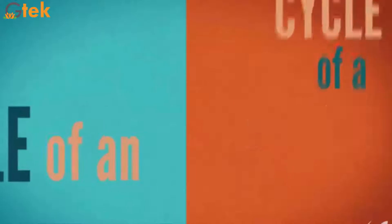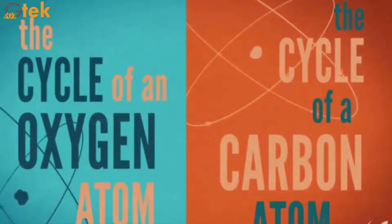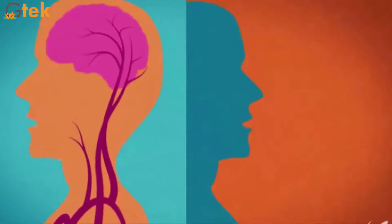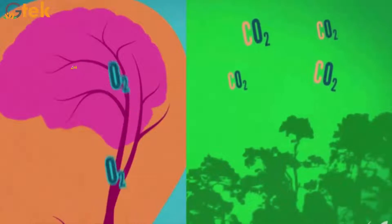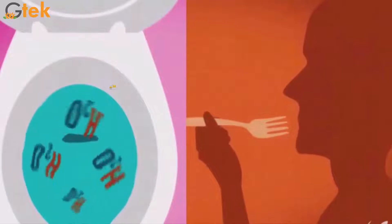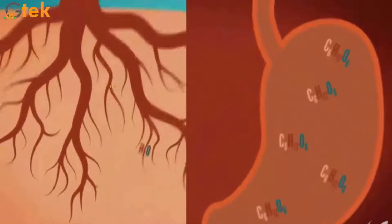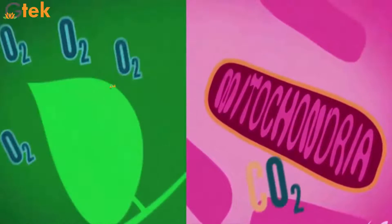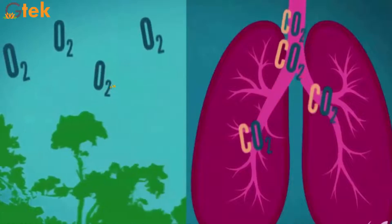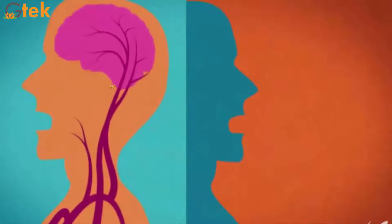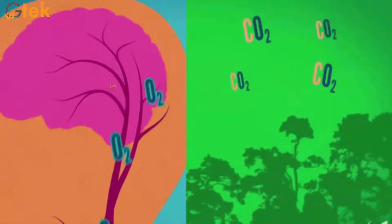Now we will talk about the cycle of an oxygen atom. You can see in the picture a human is inhaling oxygen. The oxygen enters into the brain and the body cells, then enters the mitochondria and water is released. The digestion and normal processes happen, and this water is passed from the human into the plants and trees. With the help of sunlight, oxygen is produced by the trees and inhaled by the human once again. Once the oxygen is inhaled, it is used by the human body and released as water.